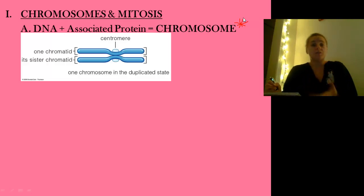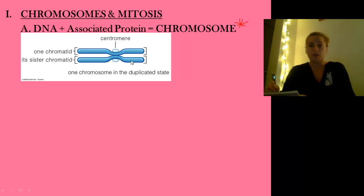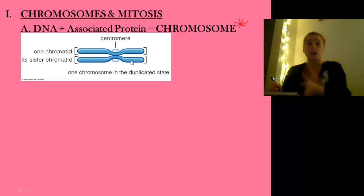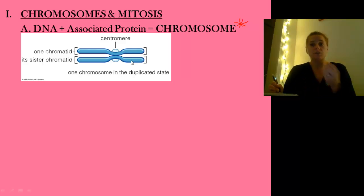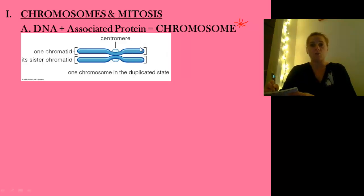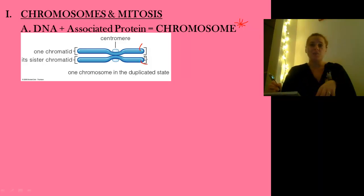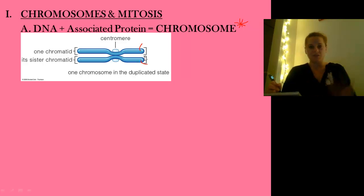So this is basically a chromosome here, and this is a duplicated chromosome. In mitosis, before the cell actually divides, it's got to double up all of its chromosomes. We have very specific names: we start with a single chromosome, and when it duplicates it's still one chromosome, but we call one a chromatid and the other its sister chromatid. We're going to be using these new terms a lot.